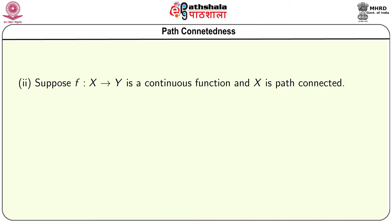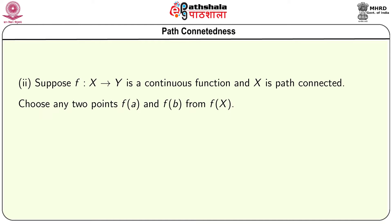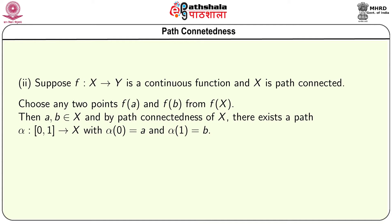We now prove the next result. Suppose f is a continuous function from X to Y and X is path connected; we want to show that its image f(X) is path connected. We choose two points f(a) and f(b) in f(X), meaning a and b are in X. Since X is path connected, there is a path alpha from [0,1] to X such that alpha(0) = a and alpha(1) = b.